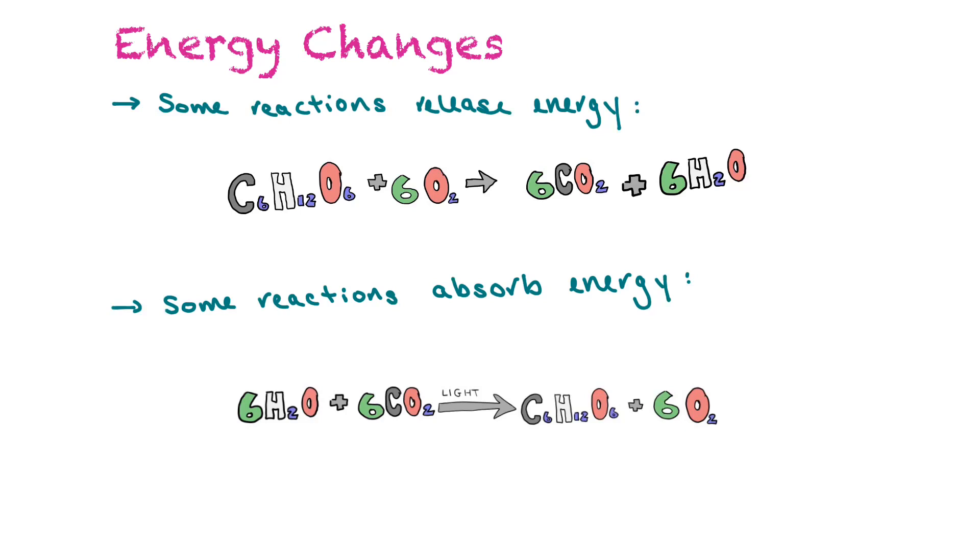Some reactions absorb energy, and that's what happens during photosynthesis. Water and carbon dioxide, with the help of the sun's light, plants are able to create simple sugars, and oxygen is produced as a byproduct. The energy is being stored or absorbed in the form of glucose.